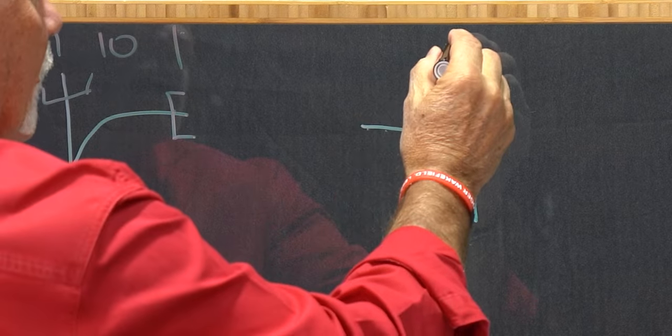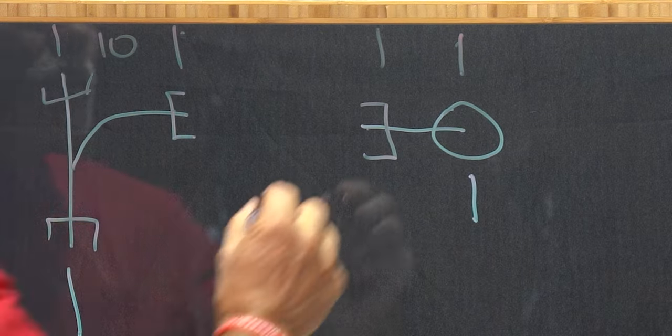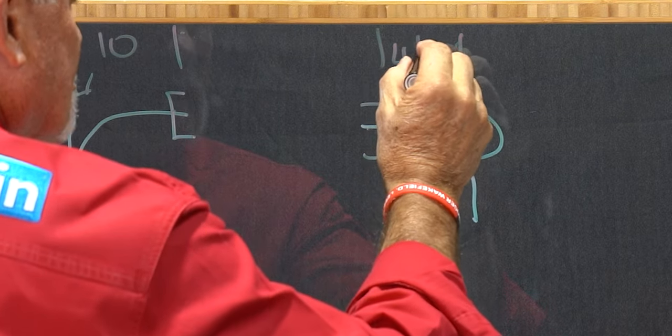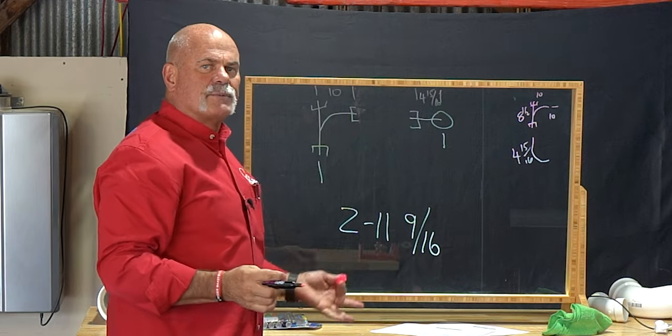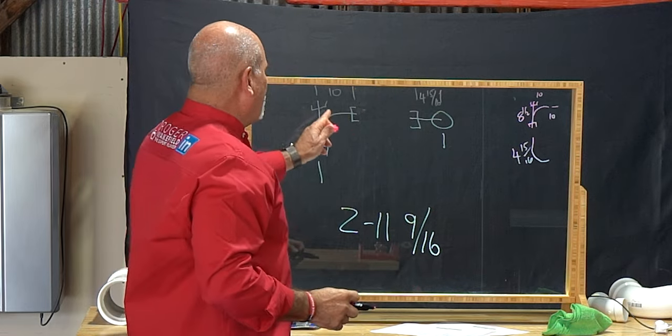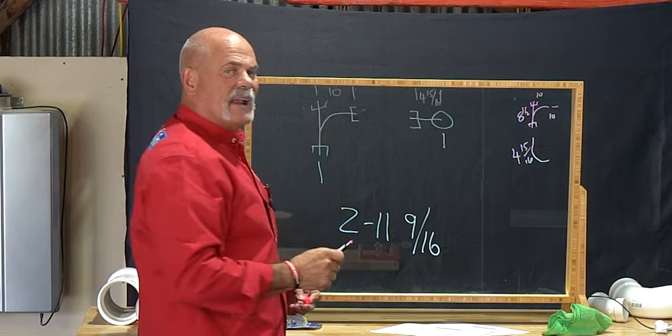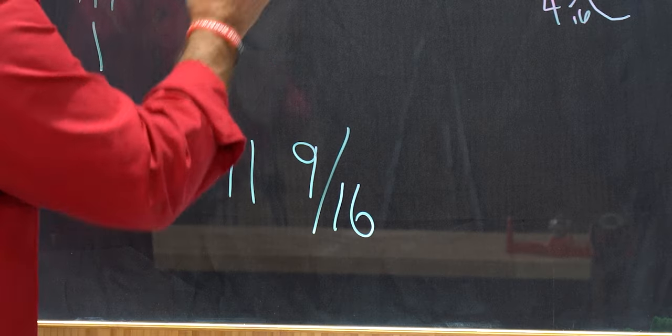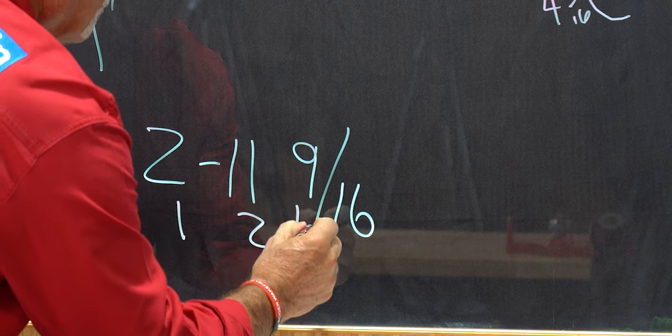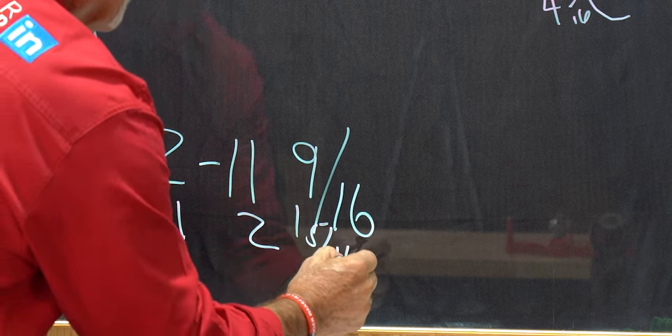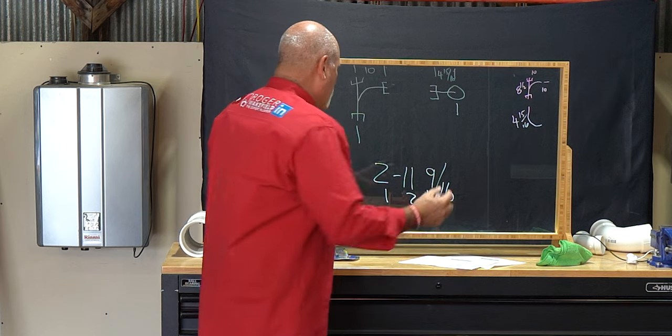Then over here from center to makeup, we've got four and 15 sixteenths. So what I'm going to do is now is I'm going to just put those together. So I need to pull out 14 inches and 15 sixteenths from nine and nine sixteenths. So I'm going to make that one foot two, two and 15 sixteenths. So this now becomes just a very simple math problem.